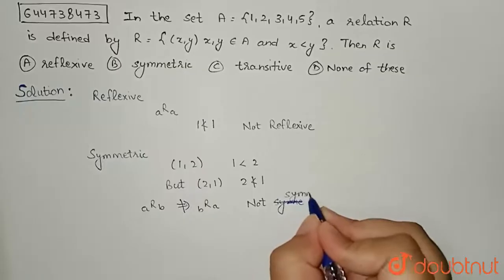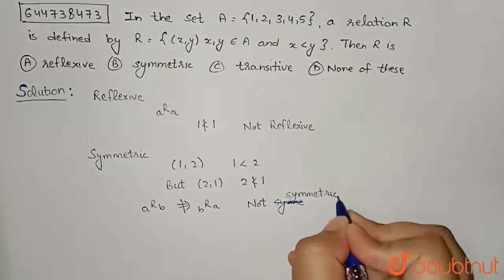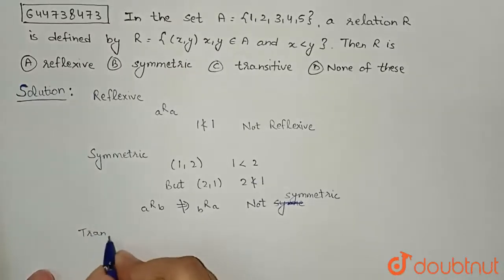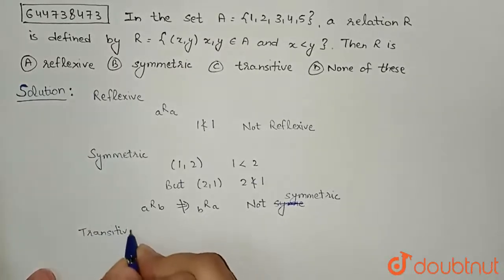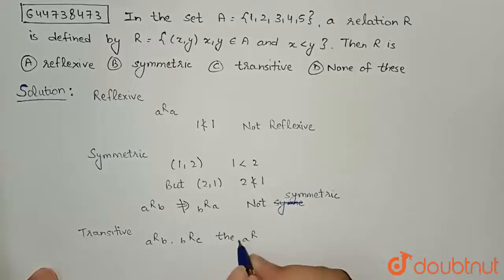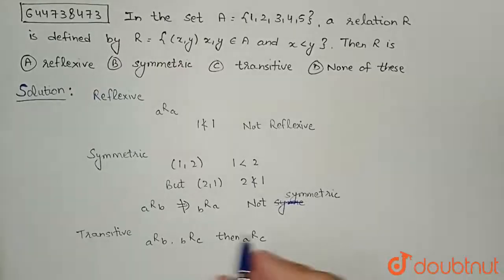Now we will check for the third condition, that is transitive. So for transitive, we can see that a is related to b and b is related to c, then a should be related to c. So let us take the example.